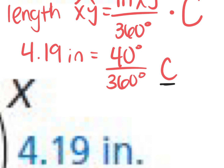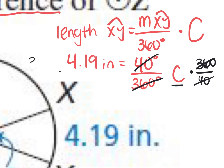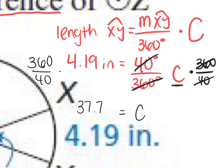We're solving for C. Multiply both sides by the reciprocal, 360 over 40. In your calculator: 4.19 times 360 divided by 40. That gives 37.71 — let's round to 37.7 inches. German confirmed the 37.7.